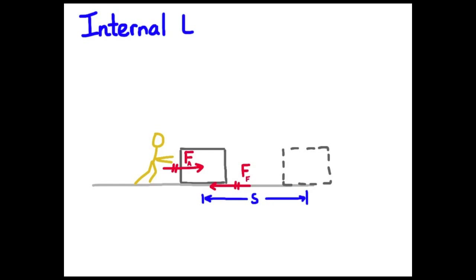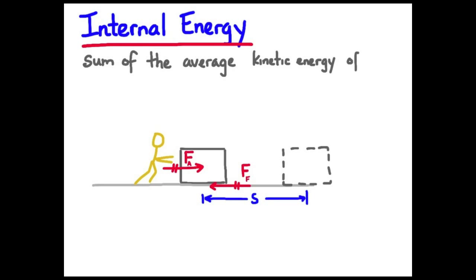Well, we know the box is moving, and therefore it has kinetic energy, bulk kinetic energy. But we also know that the particles that make up the box are moving. So, we look at something called the internal energy, which considers the energy of the particles that make up the object.